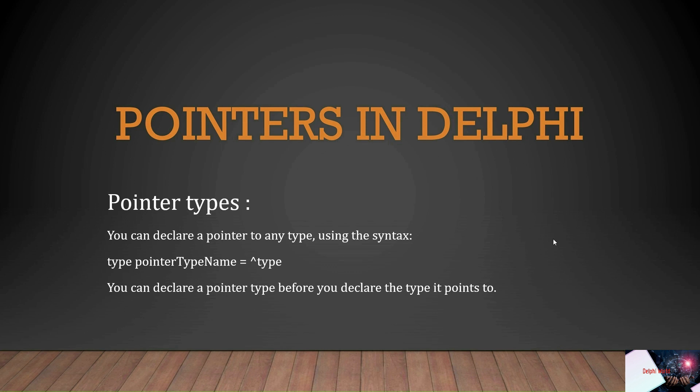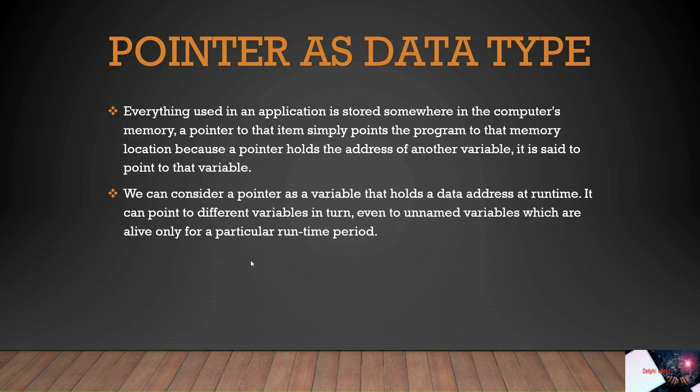You can declare a pointer to any type using the syntax: type pointer-type-name equals caret-sign and type. This caret sign is used to declare a pointer type. You need to declare the pointer type before you declare the type itself, as you will see in the demo.